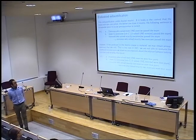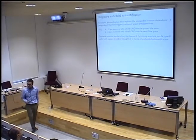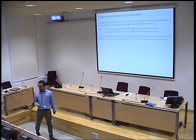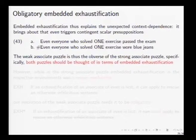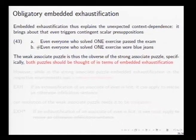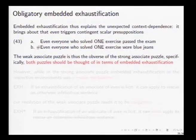By making these assumptions, we have explained the unexpected context-dependence observed with the distribution of 'even one'. We explained the weak associate puzzle — the contrast in sentence 43 — by arguing that the puzzle is the obverse of the strong associate puzzle. Both should be thought about in terms of embedded exhaustification.